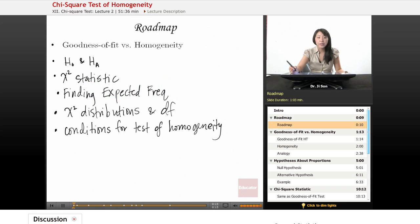Previously, we talked about the chi-square goodness of fit test. Now we're going to contrast that with this new test. It's still a chi-square test, but it's a test of homogeneity now. We're going to try and figure out when to use which test.